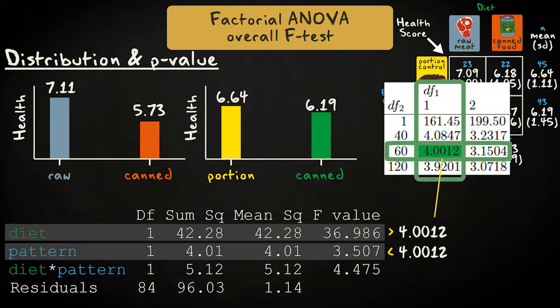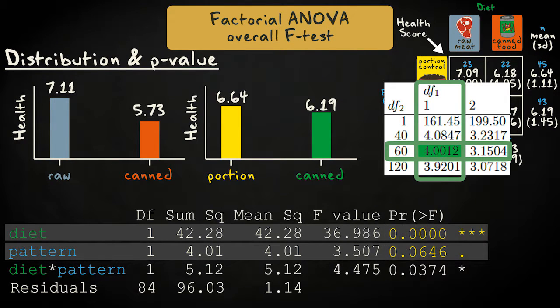The observed F value exceeds the critical value for the main effect of diet, but not for the main effect of feeding pattern. Software provides an exact p-value of 0.00003 for diet and 0.0646 for feeding pattern.